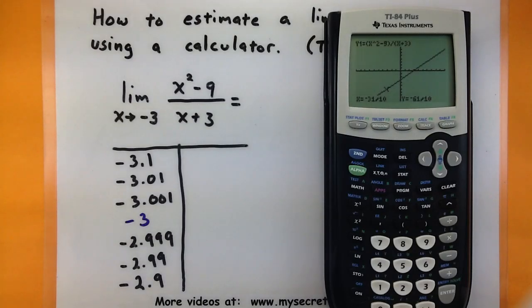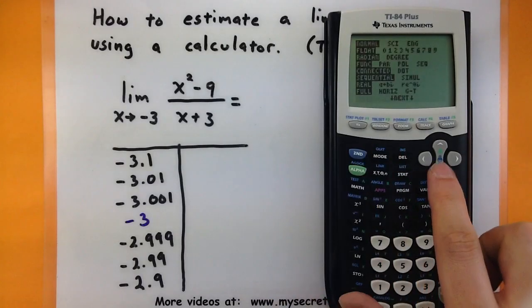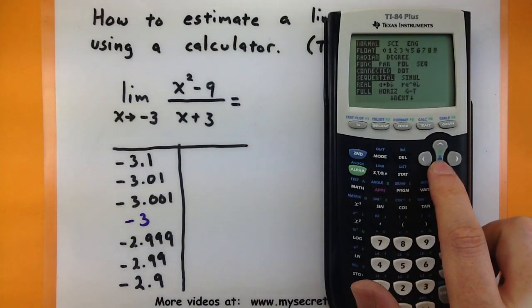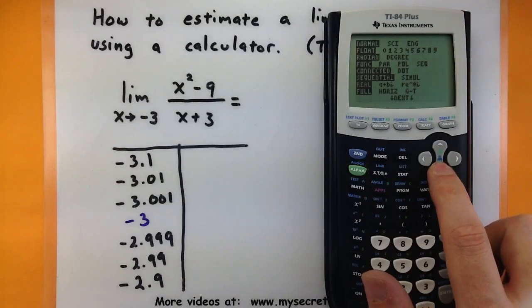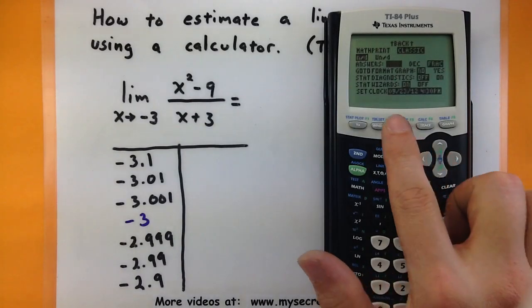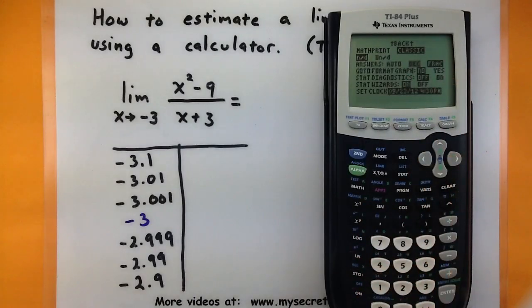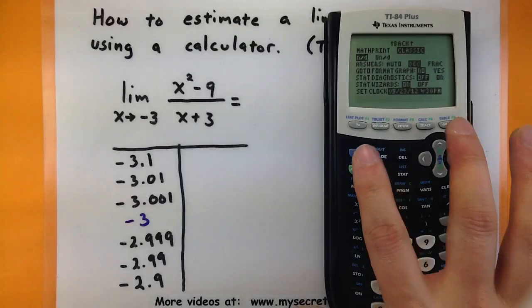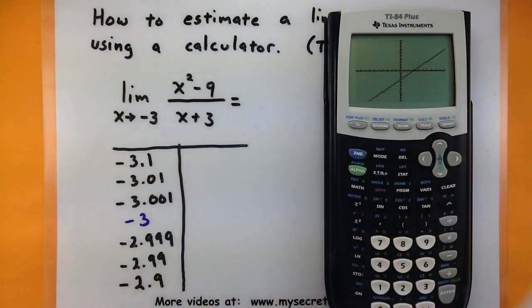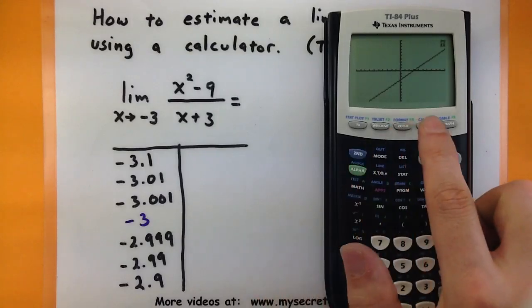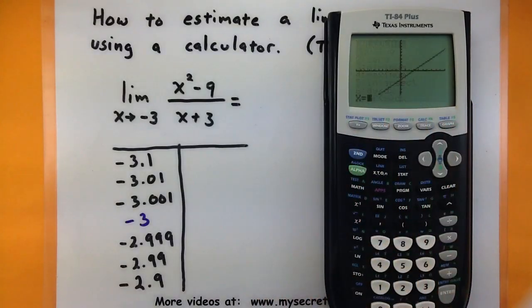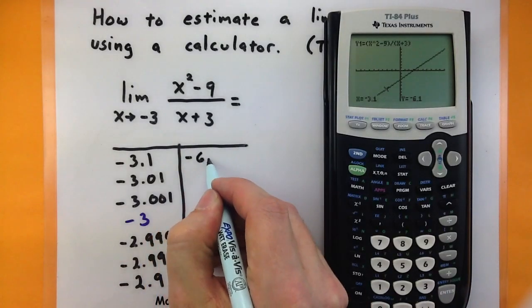To get that decimal, you can go to mode, and then basically scroll down, and it says answer is auto, decimal, or fraction. I'm going to change that to decimal and actually make it give me these decimal equivalents. Okay, let's go back to our graph. And now go to second calc, first option value, and type in that negative 3.1 again. There we go. So it looks like we get negative 6.1.